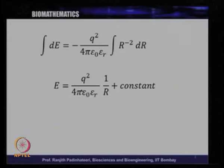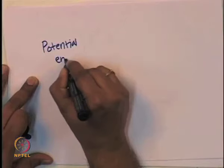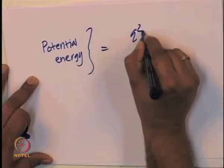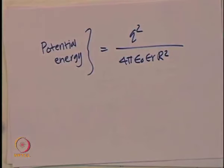This is the potential energy of two charges. Do not confuse this E with electric field — here E represents potential energy. In textbooks you might see this written as V. The potential energy of the two-charge system is q²/(4πε₀εᵣ) · (1/r) + constant. Whatever the constant, the force remains the same, because the derivative of any constant is zero.